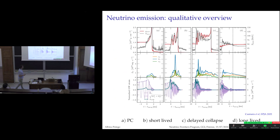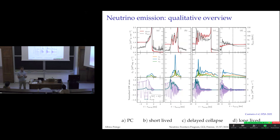This slide qualitatively shows what happens for the four different merger outcomes. On the left, prompt collapse: the density jumps at merger but never stabilizes — it increases until the spacetime forms a singularity and a black hole forms. The corresponding neutrino luminosity shows that prompt collapses produce the weakest neutrino emission. In the short-lived case, the system merges, bounces a few times, and collapses after a few milliseconds, already showing interesting features in the neutrino luminosity for all three flavors.